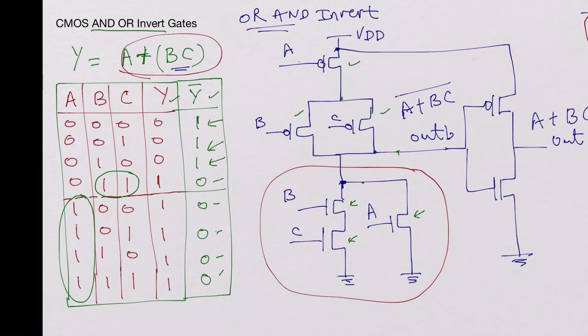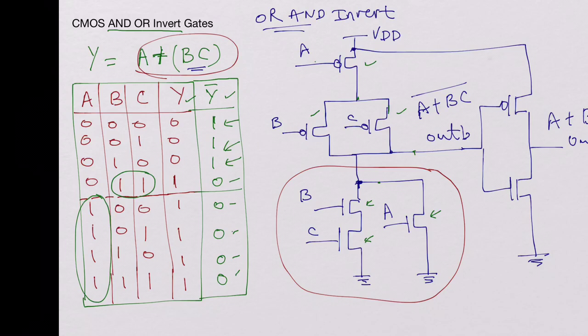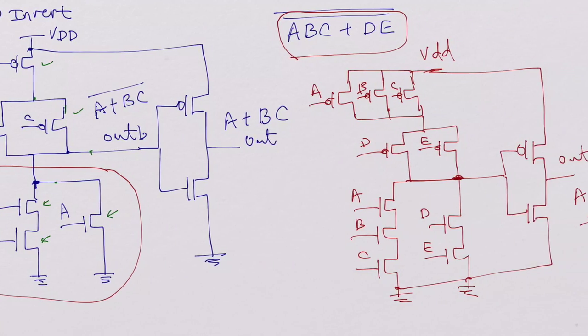So these are the CMOS AND-OR invert gates.